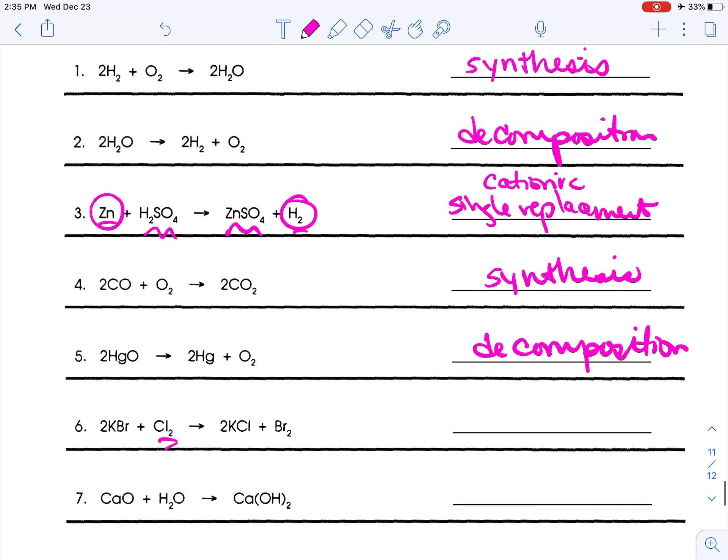Alright, we've got a singleton, compound, compound singleton, so then you got to look at your singletons. Those are non-metals, so this is a single replacement. And that is an anionic single replacement, because non-metals are replacing non-metals. Go ahead and check table J.